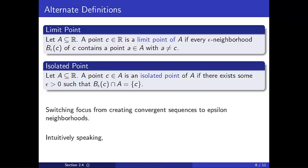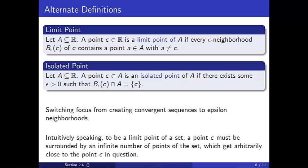Intuitively speaking, the notion of a limit point is an extension of the notion of being close to a set, in the sense that it tries to measure how crowded the set is. To be a limit point of a set, a point c must be surrounded by an infinite number of points of the set which get arbitrarily close to c.